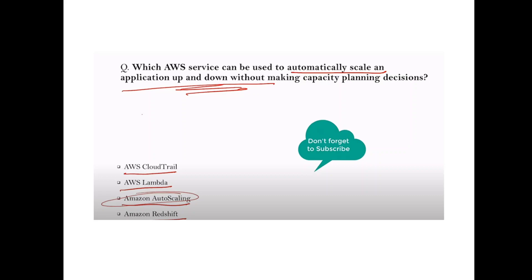Question: Which AWS service can be used to automatically scale up and down? The question gives the clue — scale automatically. Answer: Auto Scaling, because up-and-down scaling means Auto Scaling.